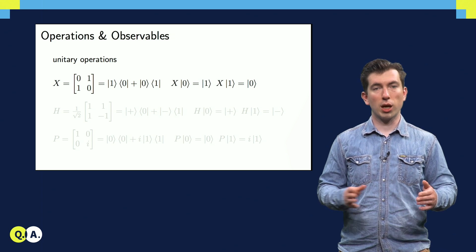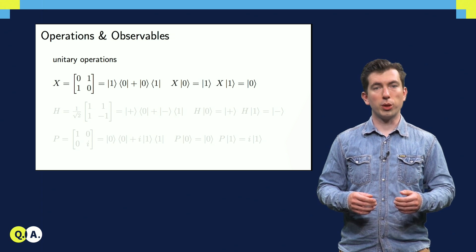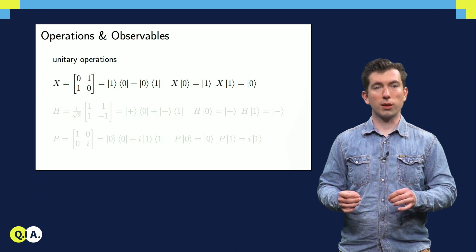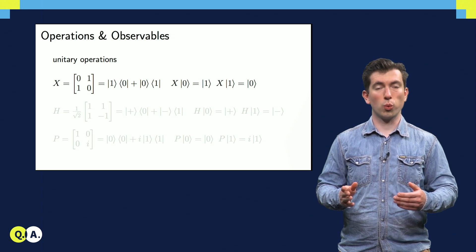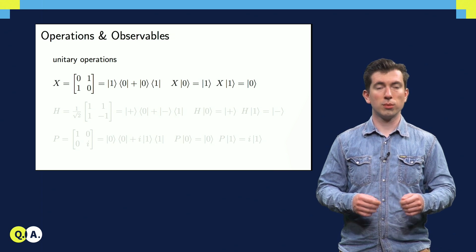Here it's decomposed into ket bra terms, and here's what happens when we use it to transform one of the computational basis states. We just get the other state. 0 goes to 1, and 1 goes back to 0. Not so exciting.